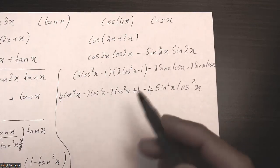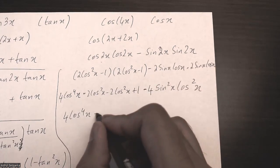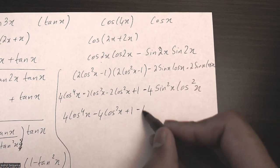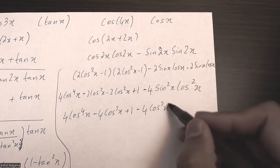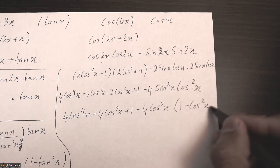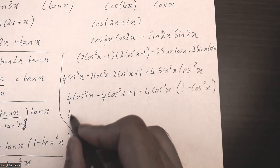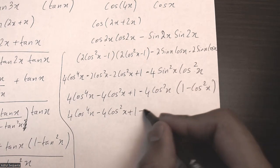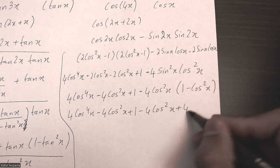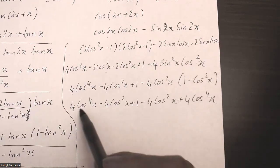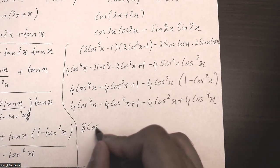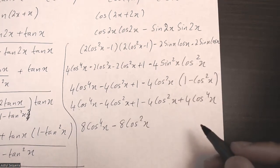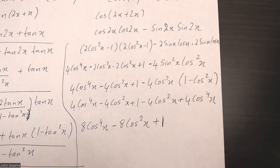Combining the like terms, I'll convert sin squared into 1 minus cos squared x. So I'll write negative 4 cos squared x first, then write sin squared as 1 minus cos squared x, and distribute into the bracket. This becomes negative 4 cos squared x plus 4 cos fourth x. Combining like terms: 4 plus 4 cos fourth gives 8 cos fourth x, negative 4 minus 4 is negative 8 cos squared x, and then just plus 1. That is my final answer.